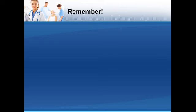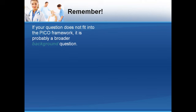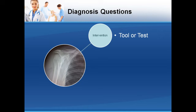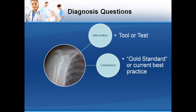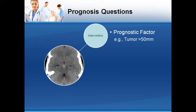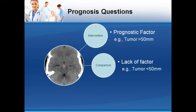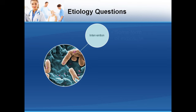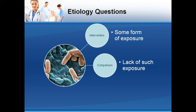There are a few points to keep in mind when using PICO. First, if your question does not fit into the PICO framework, it is probably a broader background question — refer to textbooks and reference materials for answers. For diagnosis questions, the diagnostic tool or test is the intervention, the comparison is the best tool or test (the gold standard), and the outcome is the ability to predict the presence of disease. For prognosis questions, the intervention is a prognostic factor such as the size of a tumor or a complicating illness, and the comparison is the lack of such a factor; the outcome is the quantity of life that can be expected. For etiology questions, the intervention is some form of exposure, the comparison is the lack of such exposure, and the outcome is the progression to a disease state.